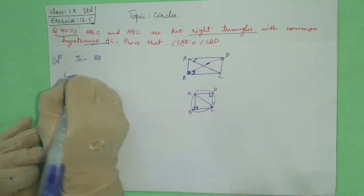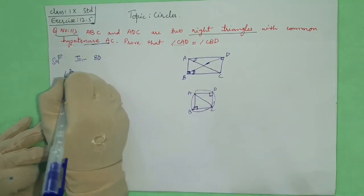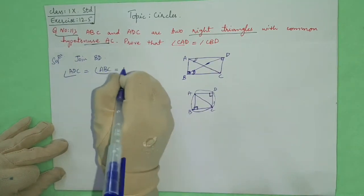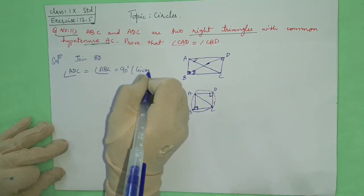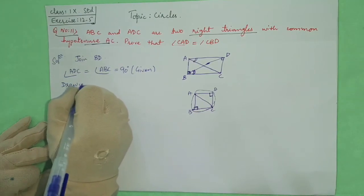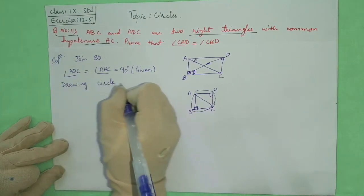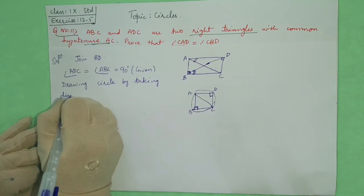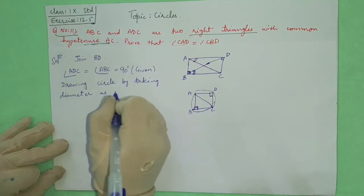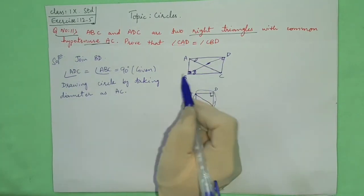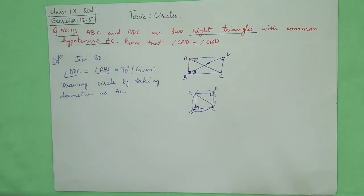As angle ADC is equal to ABC is equal to 90, which is given, the two angles are 90 degrees. It means we can draw a circle by taking the diameter as AC. If you draw diameter as AC, because the angle in a semicircle is 90 degrees, it means all four points will lie on a circle.